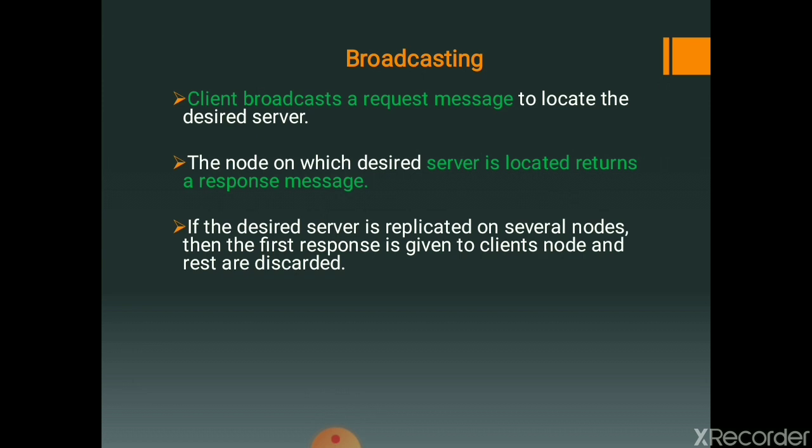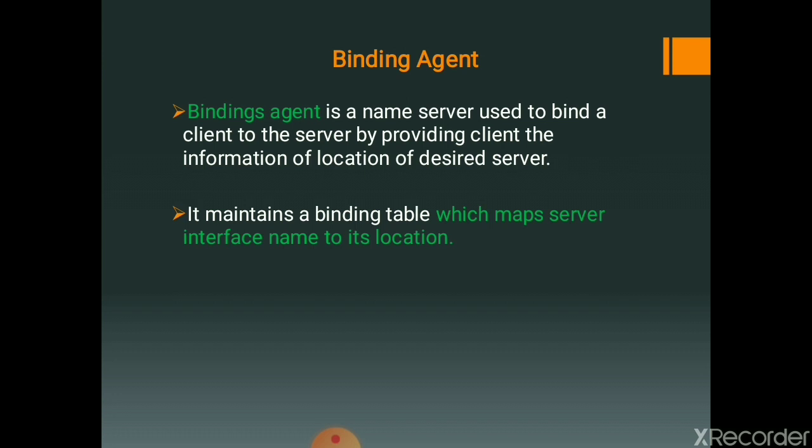Therefore, the second method, based on the idea of using a name server, is generally used for a network — this method is the binding agent method. A binding agent is a name server used to bind a client to a server by providing the client the location information of the desired server. It maintains a binding table which maps server interface names to their locations. All servers register themselves with the binding agent as part of their initialization process. To register, a server gives the binding agent its identification information and a handle used to locate it.